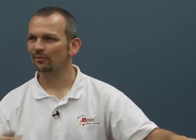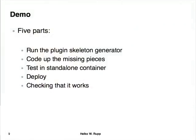The demo will consist of five parts. First is running the so-called plugin skeleton generator — a Java file that you run on the command line. It will ask you some questions, and when we're through that, it will create all the skeletons and artifacts you need for a plugin: the Maven POM file, the plugin descriptor, all the Java classes and directories. You can directly compile it and deploy it — it won't work, but it is already a plugin. Next, we will code up the missing pieces, fill them in, and compile them.